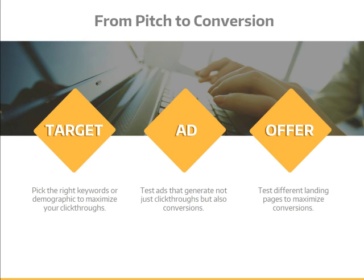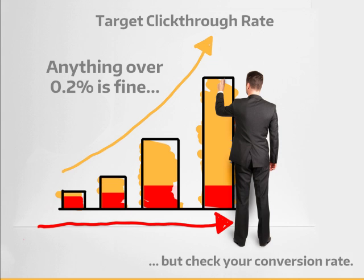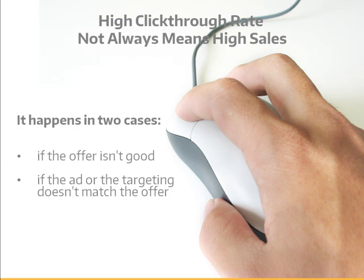If your CPC ads are giving you a click-through rate of 0.2% or more, you'll know that your ads and your targeting are fine. But if you're not making conversions, you'll be spending money on those clicks without getting anything back. High click-through rates don't always translate into high sales. It may be because the offer isn't good, but it can also mean that the ad or the targeting doesn't match the offer you're making. Dating sites, for example, have found that using pictures of half-naked women in their ads will produce a high click-through rate for ads targeted to men, but those ads will do nothing for their on-site conversion rates. So those companies run ads that produce lower click-through rates but a higher conversion rate — it's more cost-effective.